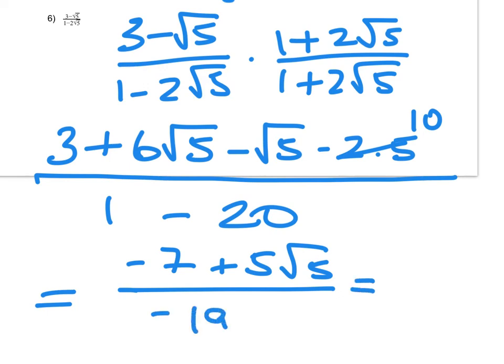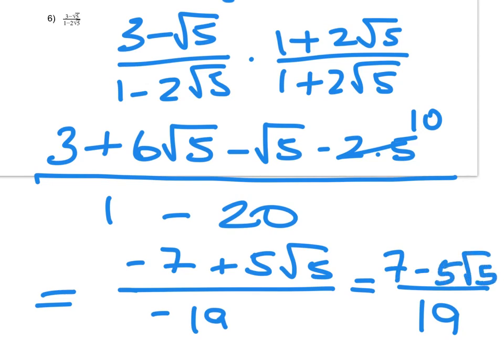Tidying it up: 2 times 5 is 10, so 3 minus 10 is minus 7. Then 6 root 5 minus root 5 is 5 root 5. So we have minus 7 plus 5 root 5, all over minus 19. I prefer not to have a negative on the bottom, so I change the signs of everything: 7 minus 5 root 5 over 19, and we're done.